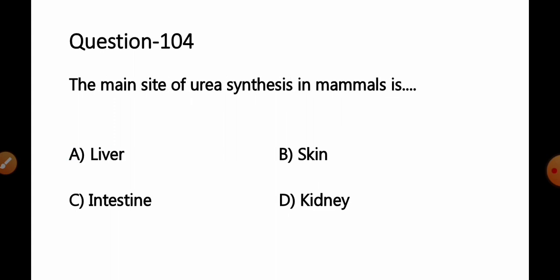Move to the next. Question number 104. The main site of urea synthesis in mammals is option A. Liver, B. Skin, C. Intestine, D. Kidney.